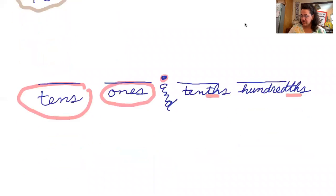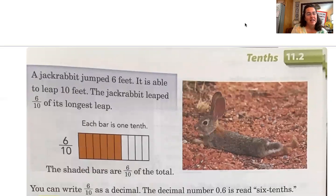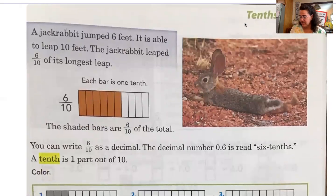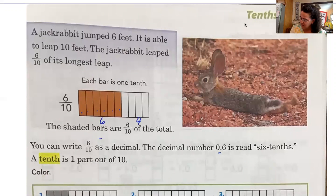So today friends we're looking at tenths. Let's get your math paper in front of you. It looks like this and it has a jackrabbit. Let's read along together at the top of the page. It says a jackrabbit jumped six feet. It is able to leap ten feet. The jackrabbit leaped six tenths of its longest leap. Then if we look at the chart or graph here it says each bar is one tenth. The shaded bars are six tenths of the total. Now we know from working with fractions that if we count that out we would see that we have one, two, three, four, five, six out of ten total, and you can write six tenths as a decimal. The decimal number is 0.6 or six tenths is how we read that.